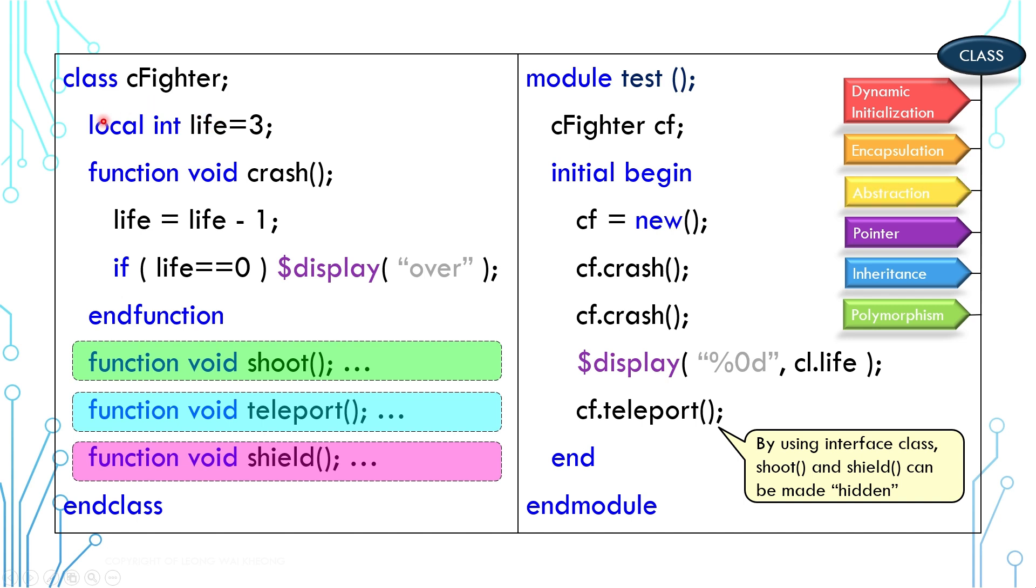In short, encapsulation dictates what a user should access or should not access from a class. For the members accessible by users, they can be further divided into different use cases. And abstraction is an ability to expose those members which are related to a particular use case.